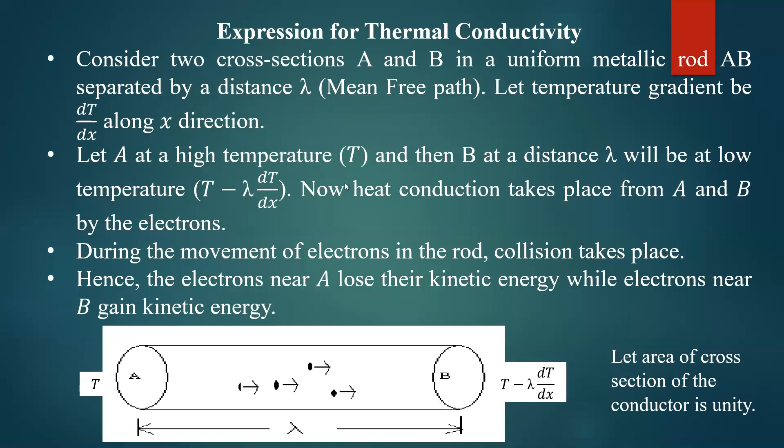Lambda is the mean free path of the electron — the distance traveled by the electron from one collision to the next collision.